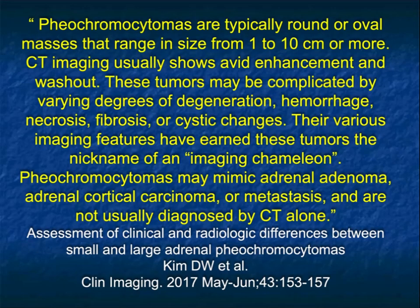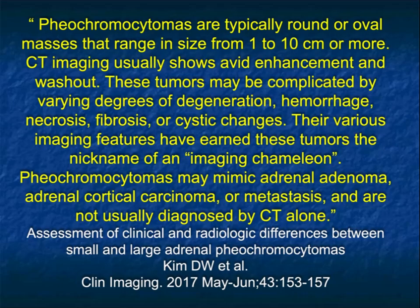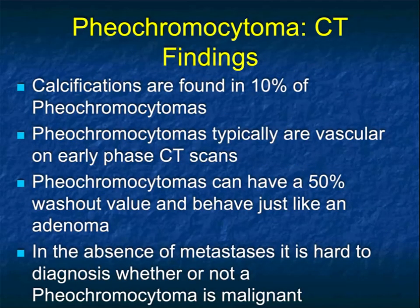Pheochromocytomas are typically round or oval, ranging in size from 1 to 10 centimeters. CT imaging shows avid enhancement and washout. However, the tumors can have variable appearances because of degeneration, hemorrhage, necrosis, fibrosis, or cystic changes. This is why pheos have earned the term imaging chameleons - they can mimic adenomas, carcinomas, and metastases, making them very challenging. In this talk, we'll show many cases demonstrating when you can confidently diagnose pheo, when you can suggest it, and when you'll have problems.